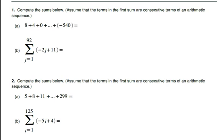All right, students, so we're going to look at some examples of finding the sum of a series. So here we go. This is compute the sums below. Assume that the terms in the first sum are consecutive terms of an arithmetic sequence. All right, let's get after it here. So we have 8 plus 4 plus 0 plus so on and so forth, all the way up to negative 540.